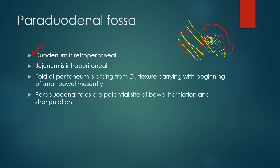These are potential spaces where a loop of the gut can enter inside and get trapped. This is known as internal herniation. A loop of the gut goes inside the fossa and may not be able to come out. If it is not able to come out, its blood supply may be affected, and that is known as strangulation. So that is the paraduodenal fossa.